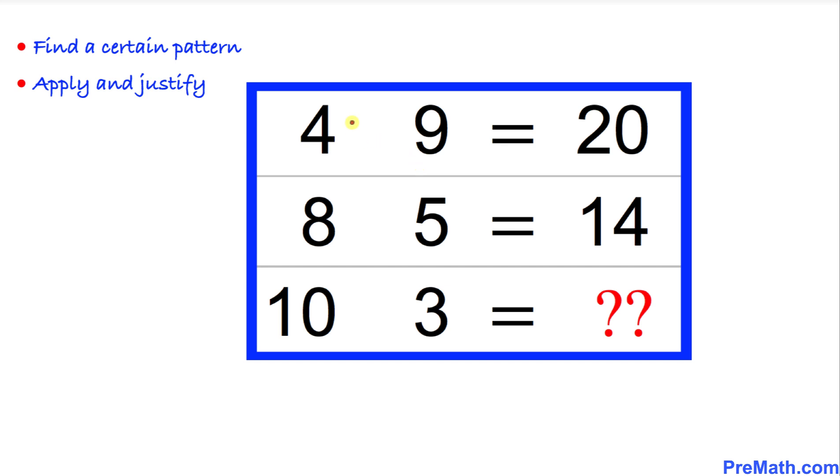Now if we look really carefully, we can see if we divide this 4 by 2, I'm going to write down 4 divided by 2 is going to give us 2. And at the same time, I'm going to multiply 9 by 2, which is going to give us 18. Now 2 plus 18 equals 20.